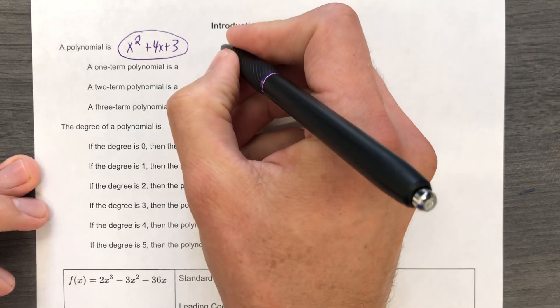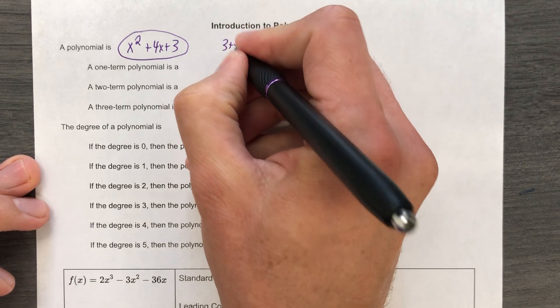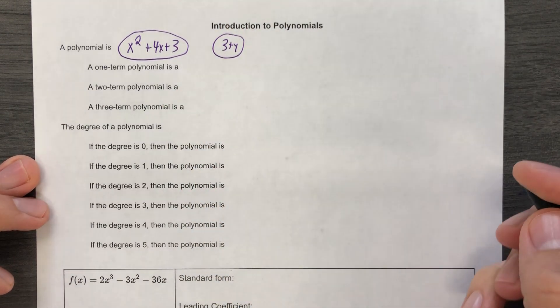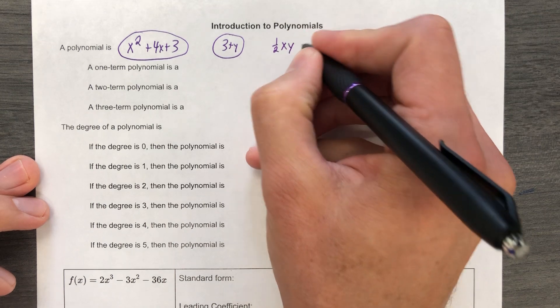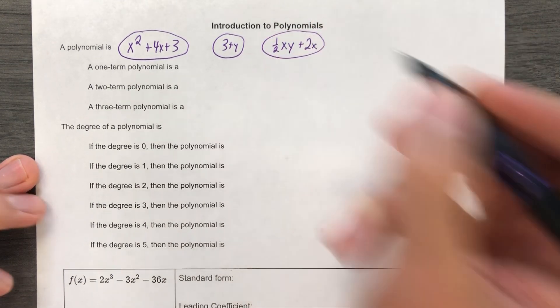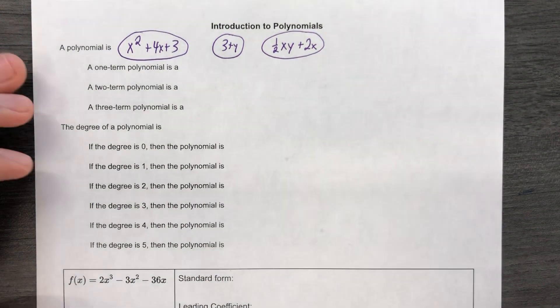Or if I handed you 3 plus y, what a cute polynomial. Or if I said, and this is going to get crazy, if I had like 1 half xy plus 2x, still a polynomial. I have a couple variables there, but still a polynomial.